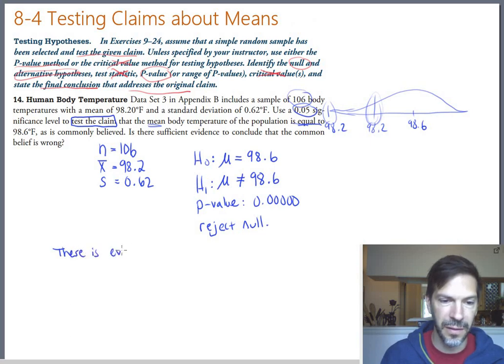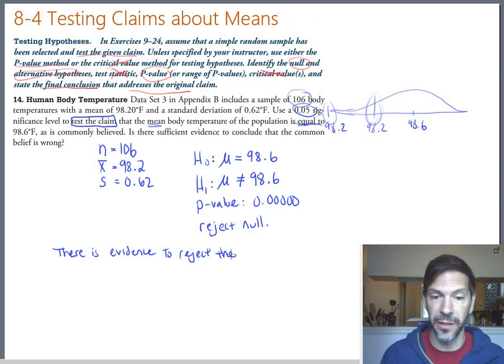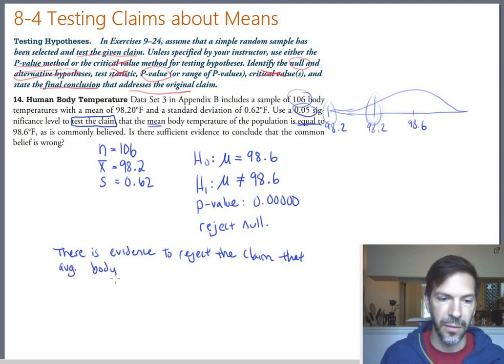Let's make that statement a little more formal. There is evidence to reject the, and I'm basically going to say reject the null but don't use the word null. Say what the null actually means. There's evidence to reject that the mean body temperature is 98.6. Or to reject the claim that mean or average body temperature is 98.6.